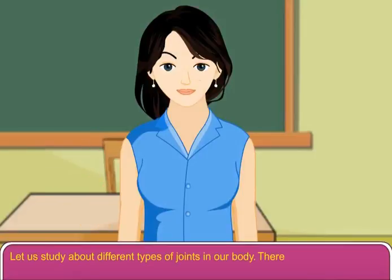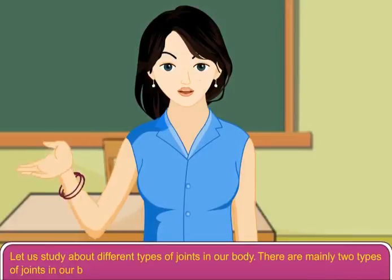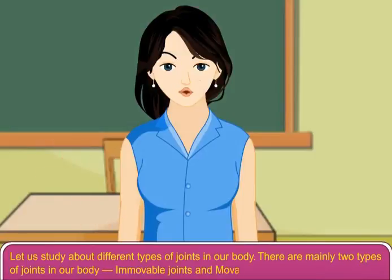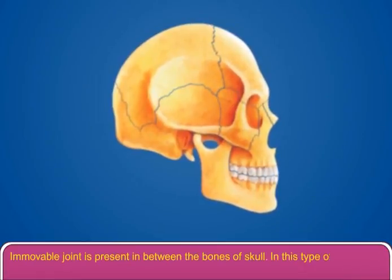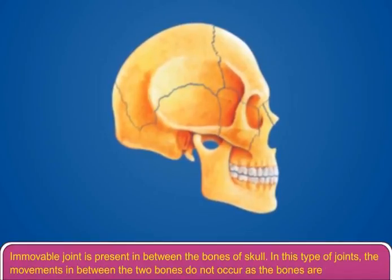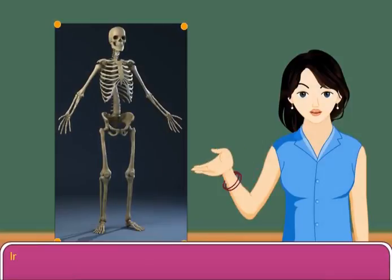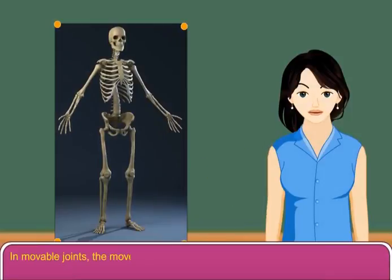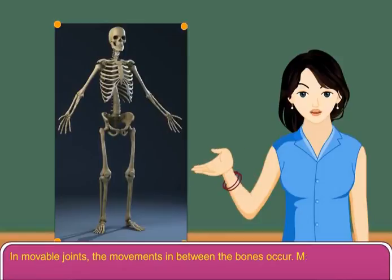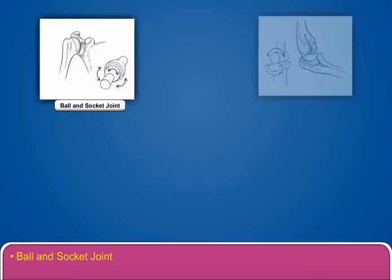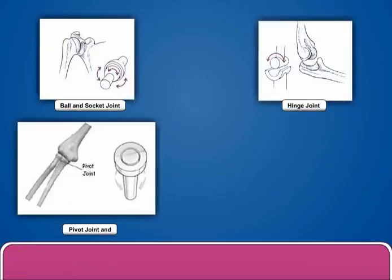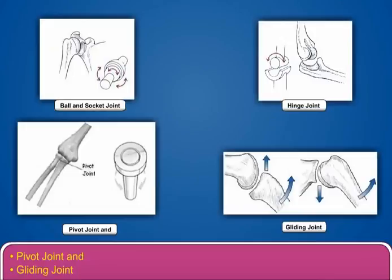There are mainly two types of joints in our body: immovable joints and movable joints. Immovable joints are present between the bones of the skull; in this type, movements between the two bones do not occur as the bones are firmly attached. In movable joints, movements between the bones do occur. Movable joints are of the following types: ball and socket joint, hinge joint, pivot joint, and gliding joint.